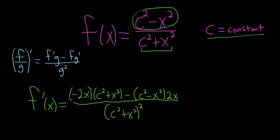So again, it's the derivative of the top, which is negative 2x, times the bottom, minus the top times the derivative of the bottom, all over the bottom squared.